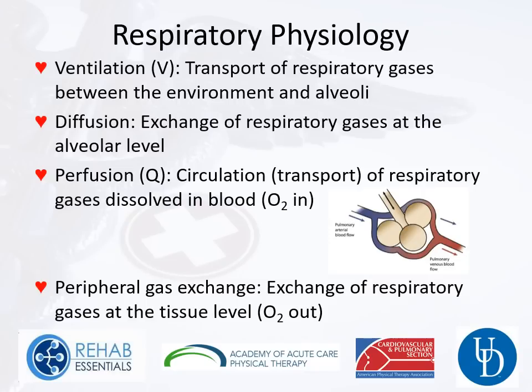Basic respiratory physiology: ventilation (V) transports respiratory gases between the environment and the alveoli. Diffusion is the exchange of gases at the alveolar level — oxygen moves in, CO2 moves out. Perfusion (Q) is the pulmonary circulation — that's why it's called a VQ scan. Deoxygenated pulmonary arterial blood (shown in blue) goes by the alveoli, picks up oxygen onto the hemoglobin, and comes out as oxygenated pulmonary venous blood going to the left side of the heart.